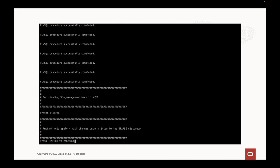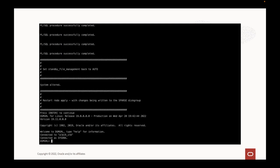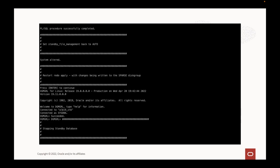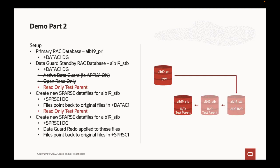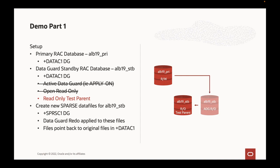This script is executed inside the standby database. Turning standby file management back on, then re-enabling redo apply in DataGuard Broker, and restarting the database. That first iteration is now done. I have a primary database and now sparse files — therefore a snapshot as a read-only test parent. It happens to be my original standby database in all its materialized glory, but it is now a test parent I can use to create sparse clones.